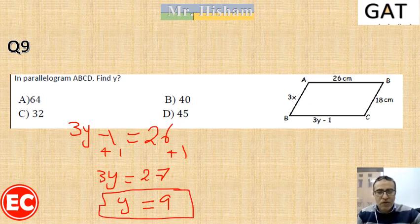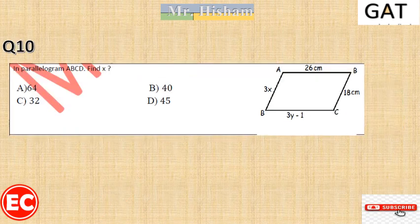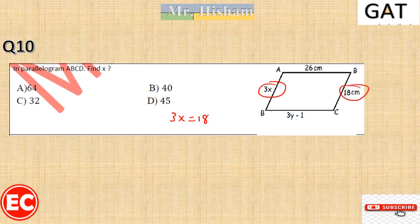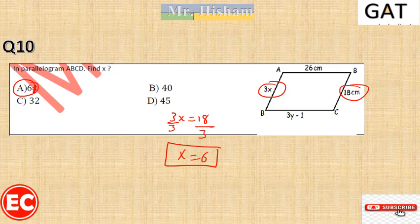In parallelogram ABCD, find the value of X. Since opposite sides in a parallelogram are equal, we have 3X equals 18. Dividing both sides by 3, X equals 6. The correct answer is A.